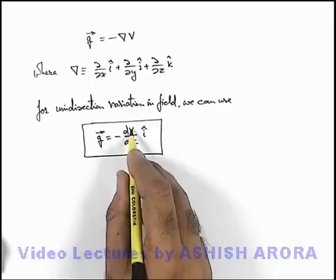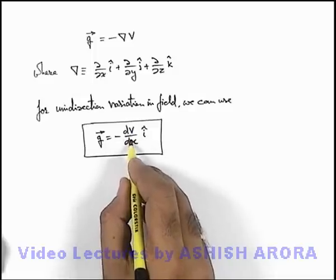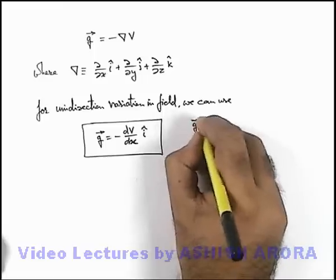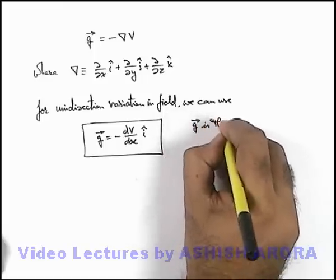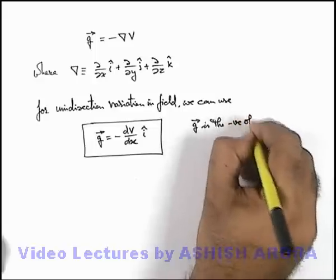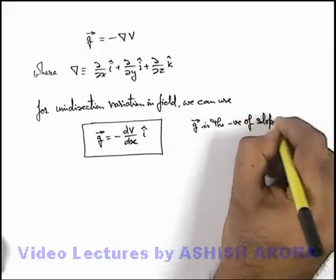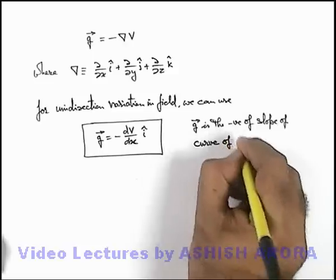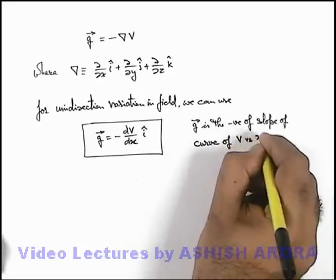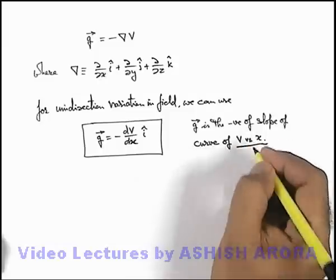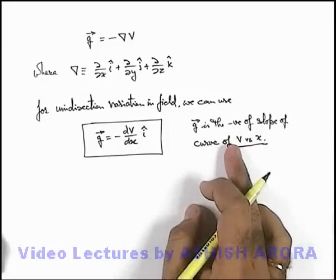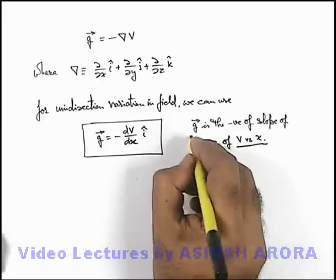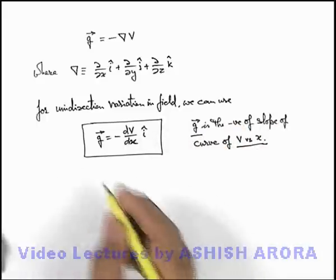So if we plot a curve between gravitational potential and position, we can write that g vector is the negative of the slope of the curve of potential versus position. Whenever a curve is plotted in gravitational potential and position, the negative of the slope at any point gives us the value of g vector.